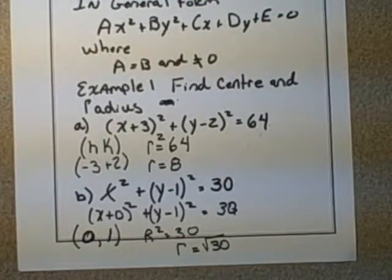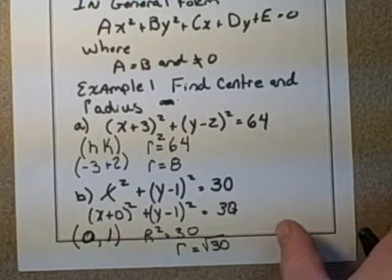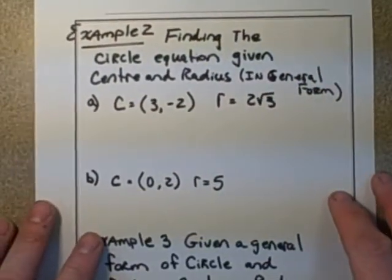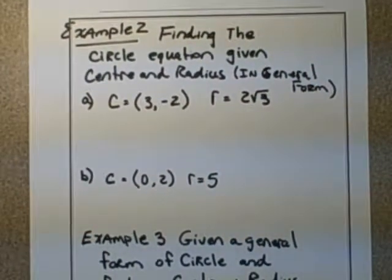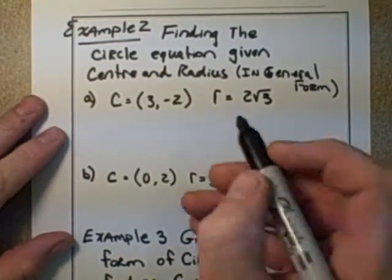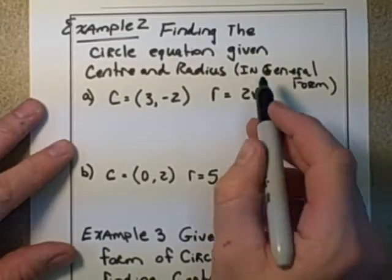There are second equations that you deal with in circles, quite similar. And here we have finding a circle equation when we're given the center and the radius. So it's the opposite of what we just did in Example 1. So what you do is you use the standard form of the equation.